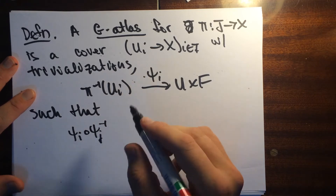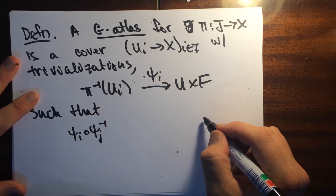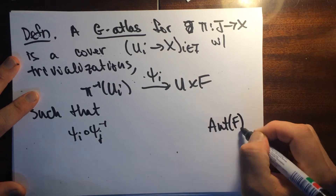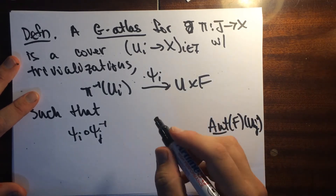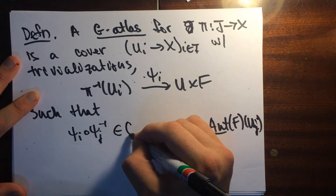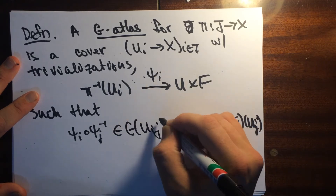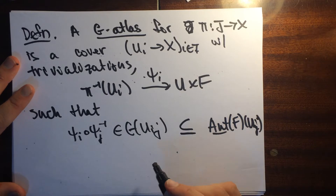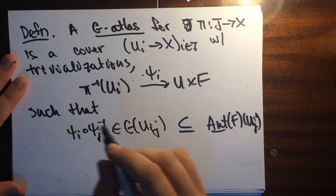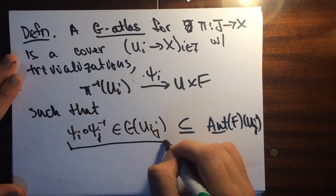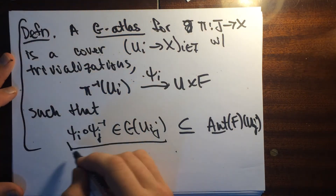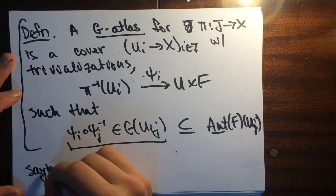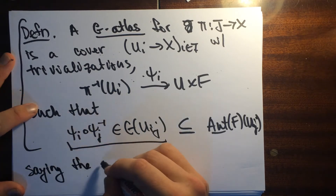...lives in Aut(F)(U_ij), but what we're going to ask is something a little stronger: that the transition maps live in G(U_ij), which is contained in Aut(F)(U_ij). So the whole definition is saying that the transition maps lie in the proper subgroup G.